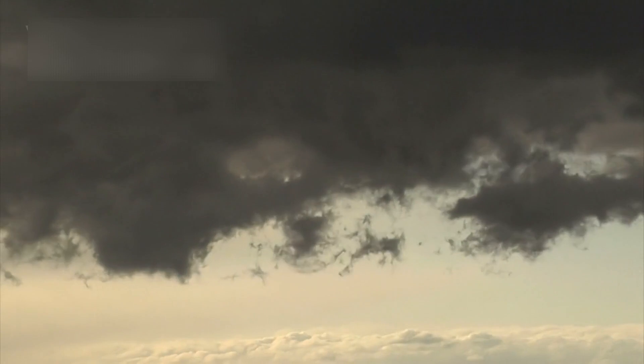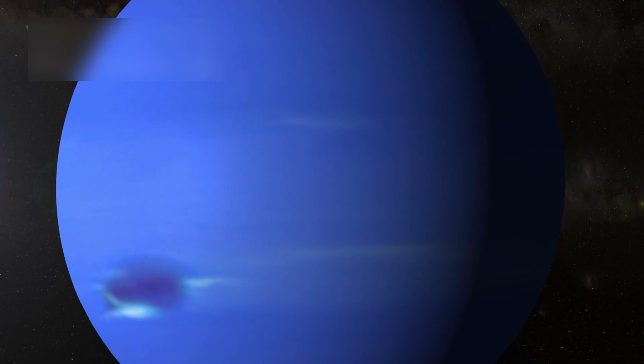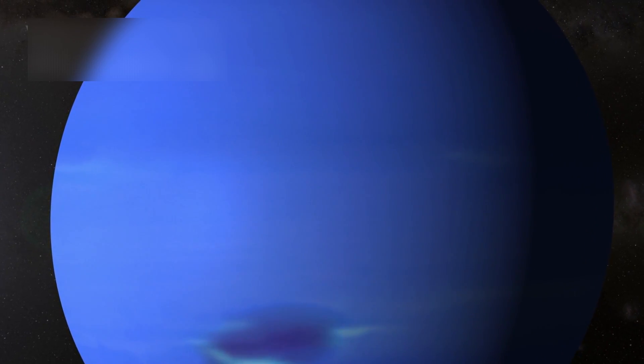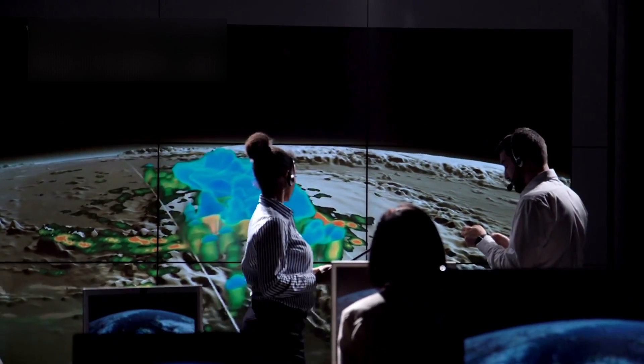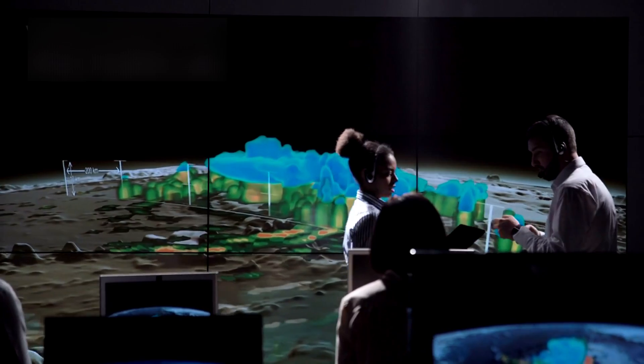Its atmosphere also reflects this hidden turmoil. Winds screaming faster than 1,300 mph sweep across Neptune's skies, the fastest ever measured in the solar system. For decades, scientists assumed that these storms were powered by faint sunlight, mixed with the planet's rotation.